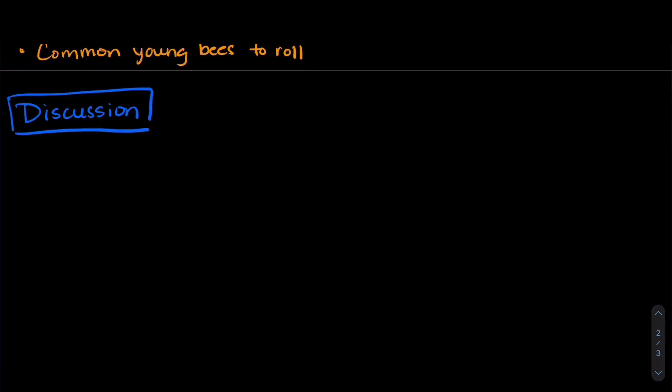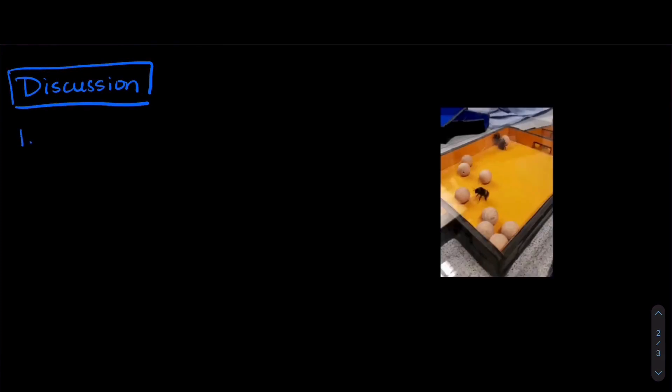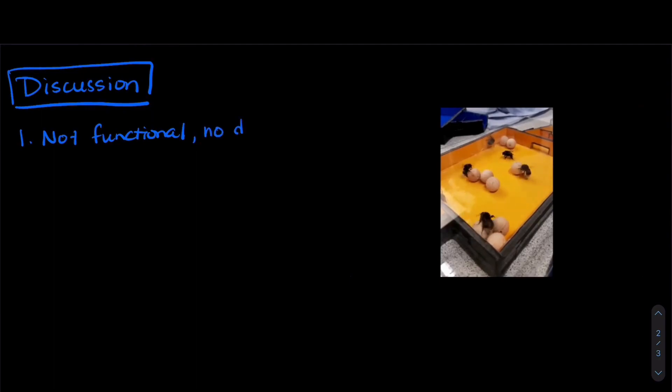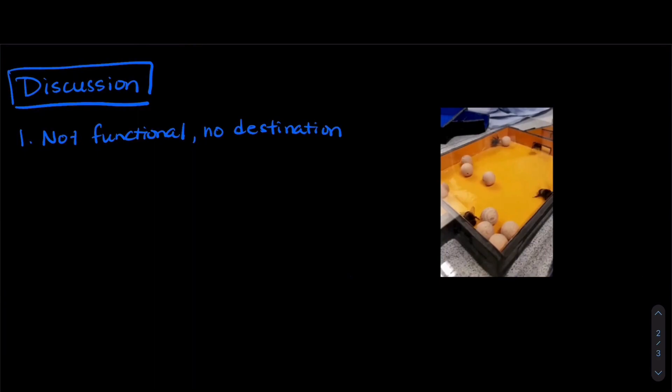So we're going to head back to those five rules of play to try and see if our bees rolling these wooden balls actually meet those five rules of play. So the first is rolling these balls is not functional. The bees didn't seem to have any destination in mind. They didn't try and eat them or mate with them. And so there's not actually a functional role of playing with these little wooden balls.